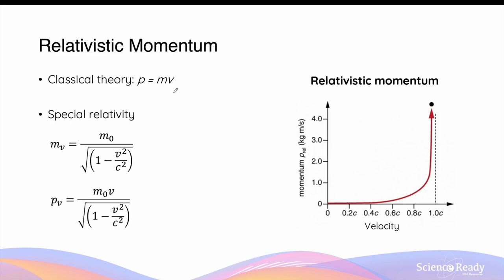Another implication of mass dilation is the momentum of the object. In classical theory — that is Newtonian physics — momentum of the mass is given by its mass multiplied by its velocity, mv. However, in special relativity, since the mass of the object is affected by its velocity, its momentum also becomes a function of its velocity. That is, the relativistic momentum is equal to the object's rest mass m0 multiplied by its velocity, divided by the square root of 1 minus v squared over c squared.